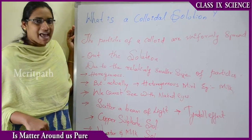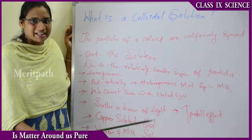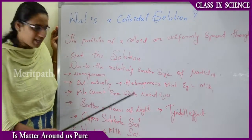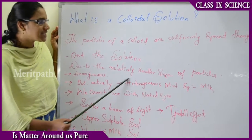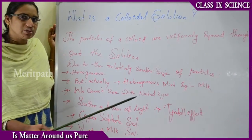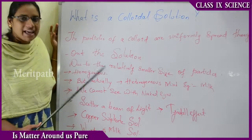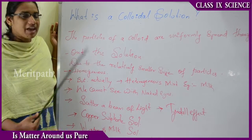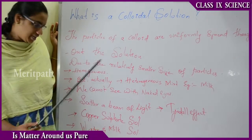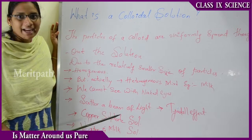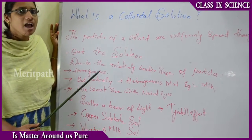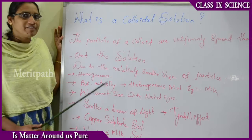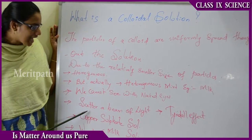Water has different chemical properties compared to milk. Therefore, a colloidal solution is classified as a heterogeneous solution. Due to the relatively smaller size of colloidal particles compared to heterogeneous suspension particles, we feel as if they are homogeneous, but they are not. We cannot see colloidal particles with the naked eye because they are very small — similar to homogeneous solutions in that respect. But compared to heterogeneous suspensions, we can see the scattered beam of light.